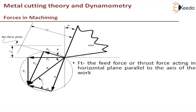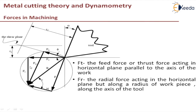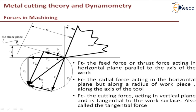Next, we have FT, that is feed force or thrust force. This force is also generated by holding the cutting tool. And then you have a radial force which is not represented in this figure because this is 2D, that is orthogonal cutting. But in case of oblique cutting, there is a radial force also present. And then you have FC, that is the cutting force.